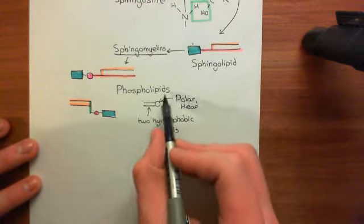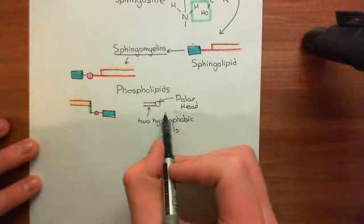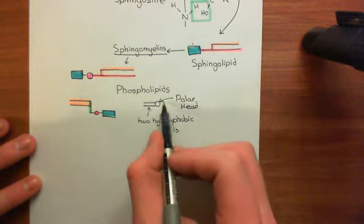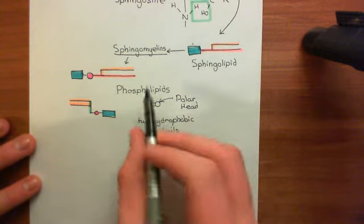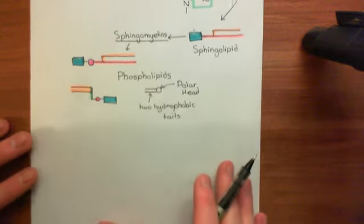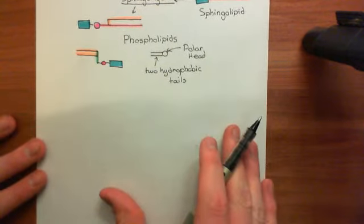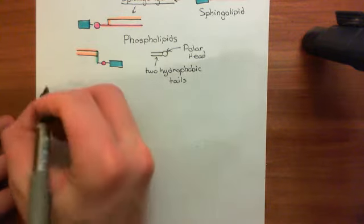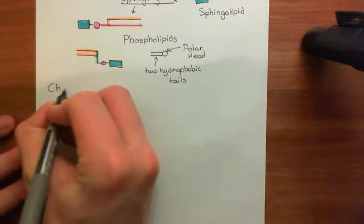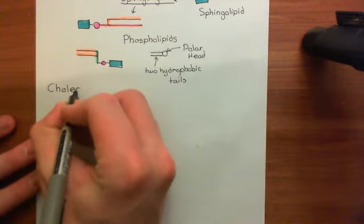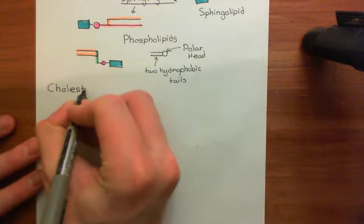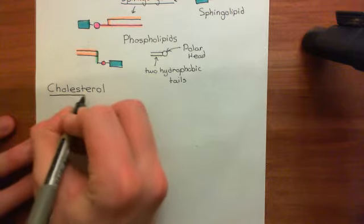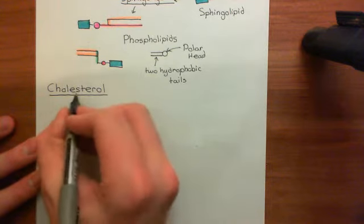We will use this phospholipid cartoon picture later on, and you should remember that it could mean either a phosphoglycerolipid or one of these sphingomyelins. So that's the final form of lipid molecules then — cholesterol. And we also want to discuss cholesterol esters.